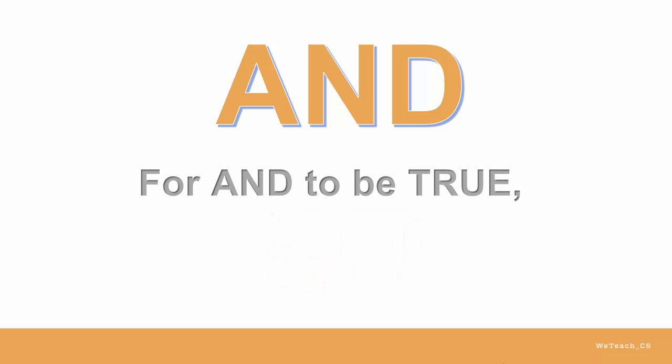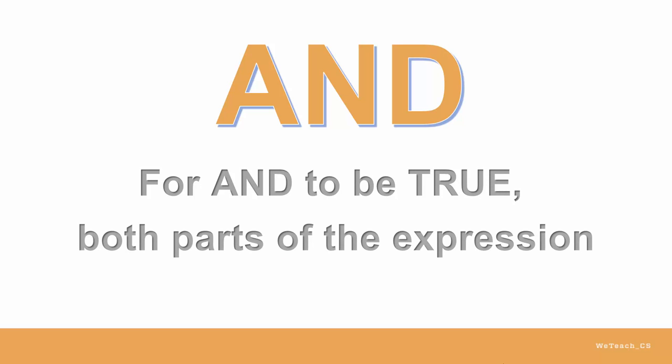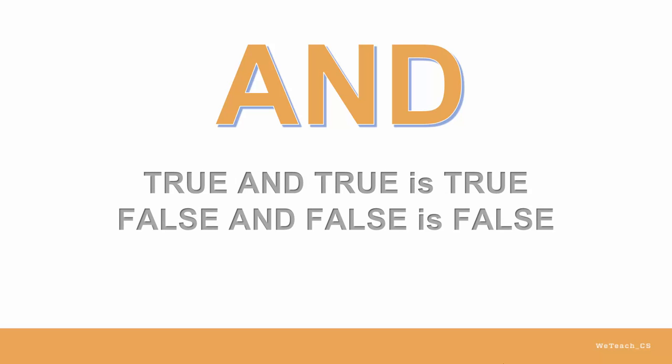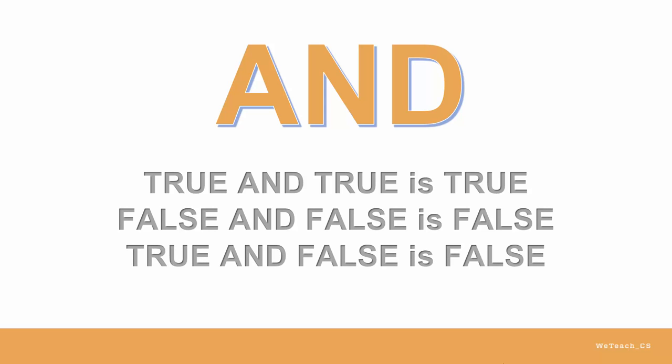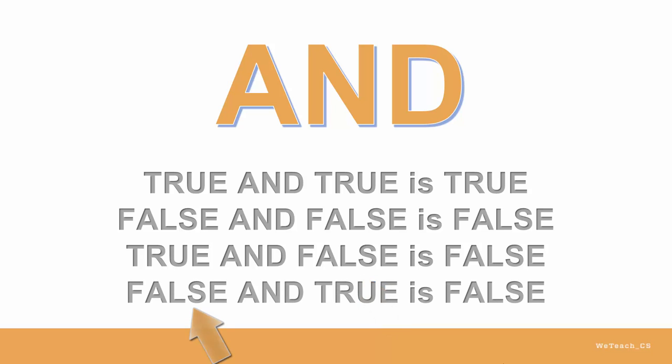Think about it. For the AND operator to be TRUE, what must be the case? Both parts of the expression must be TRUE. If either is FALSE, the entire expression is FALSE. Let's look at the four possibilities for AND. TRUE and TRUE is TRUE. FALSE and FALSE is FALSE. TRUE and FALSE is FALSE because the second part is FALSE. FALSE and TRUE is FALSE because the first part is FALSE.